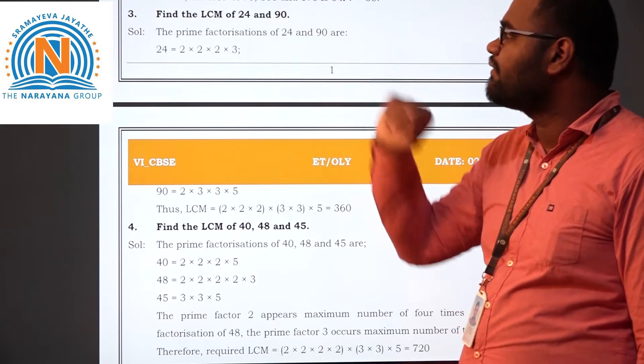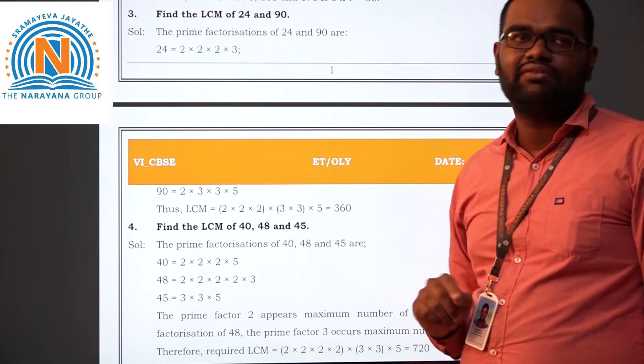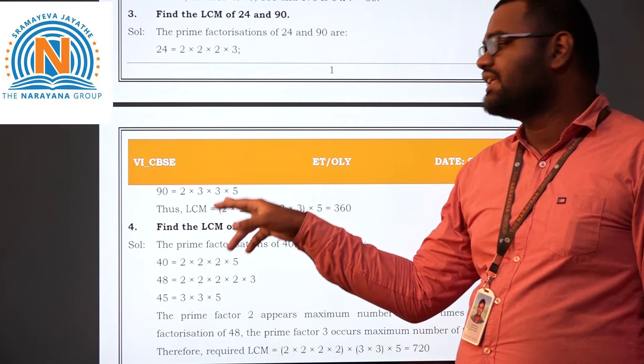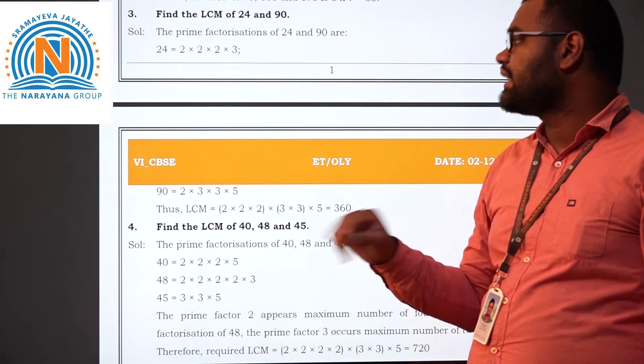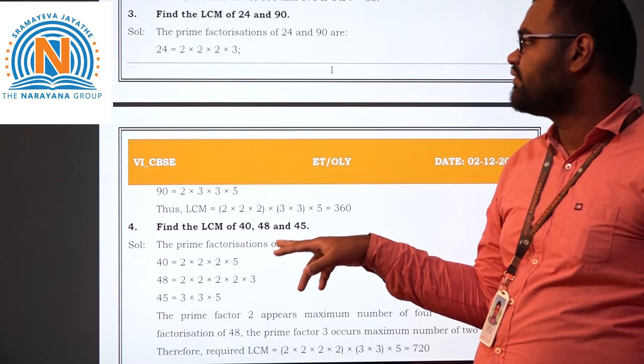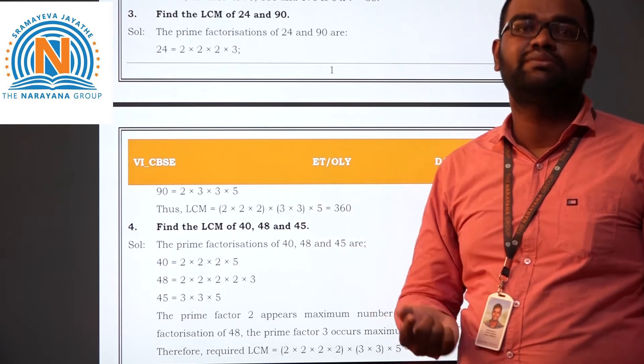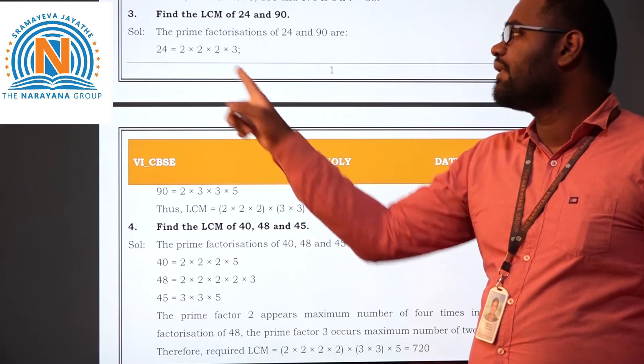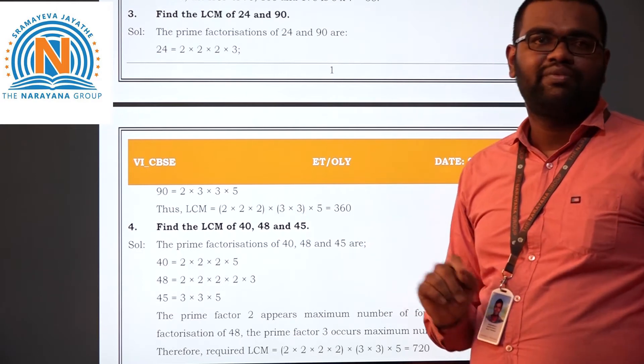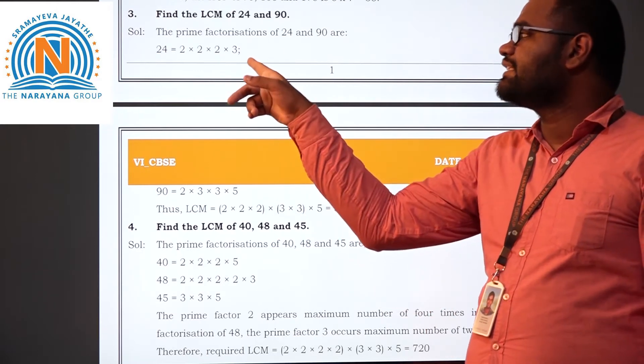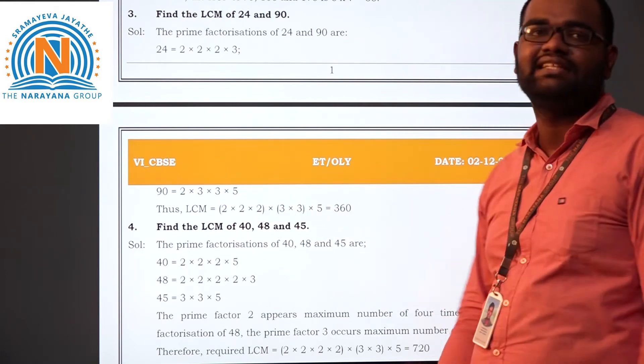Third problem: find LCM of 24 and 90. 24 if you take prime factorization: 2 times 2 is 4, 4 times 2 is 8, 8 times 3 is 24. For 90: 2 times 3 is 6, 6 times 3 is 18, 18 times 5 is 90. Now here if you see, 2 is present. What is the largest count of 2? Which count of 2 is more? Here 2 is only present 1 time. It is present 3 times here. This one alone we should take here: 2 into 2 into 2. Next number is 3. 3 is present only 1 time. Here present twice. So that we have to take. Next 5. 5 is present only 1 time. This is the LCM.